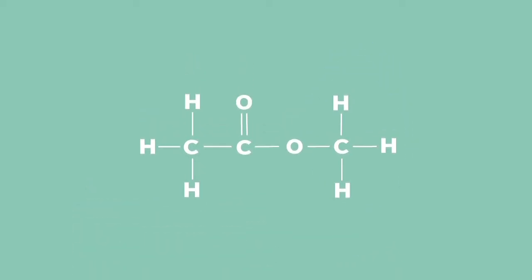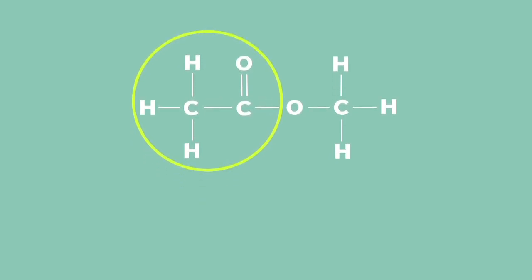The side that comes from the carboxylic acid is named second. We count the carbons and assign the prefix meth, eth, prop, but, and end with the suffix anoate.